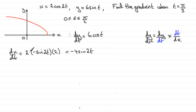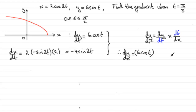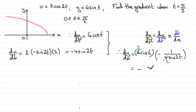So dt/dx is going to be 1 over minus 4sin2t. Substituting both into the chain rule expression, dy/dx equals dy/dt times dt/dx, which gives 6cost multiplied by minus 1 over 4sin2t. Simplifying by dividing 2 into both 6 and 4, we end up with dy/dx equals minus 3cost all over 2sin2t.